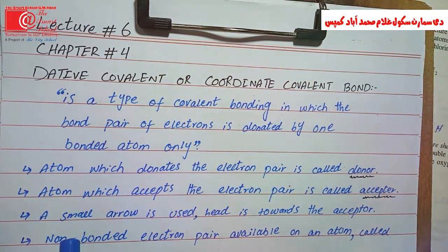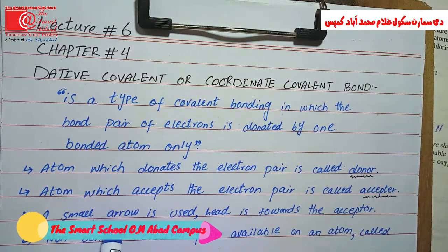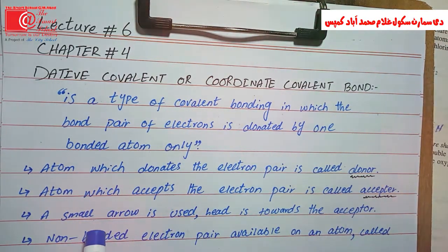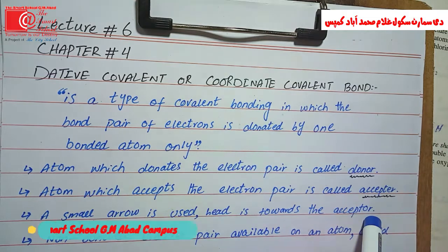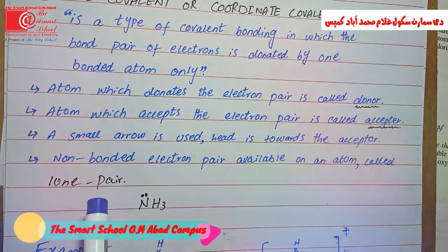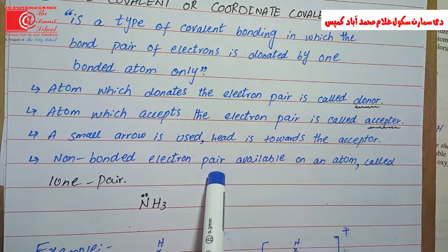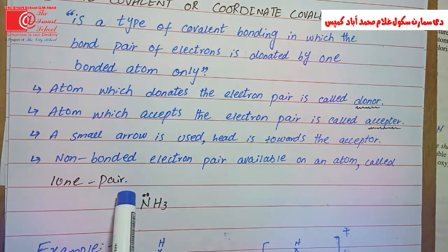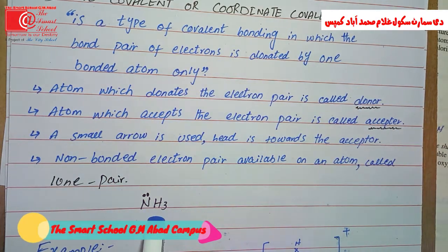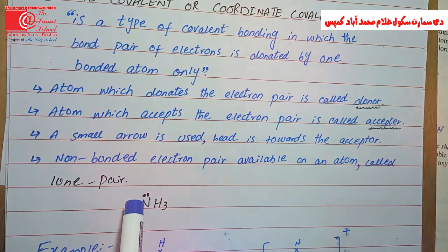To represent a coordinate covalent bond, we show a small arrow. We also show short lines for each bond. There is a non-bonded electron pair on the atom, which we show as two dots — this is the lone pair, which will not participate in the bond.